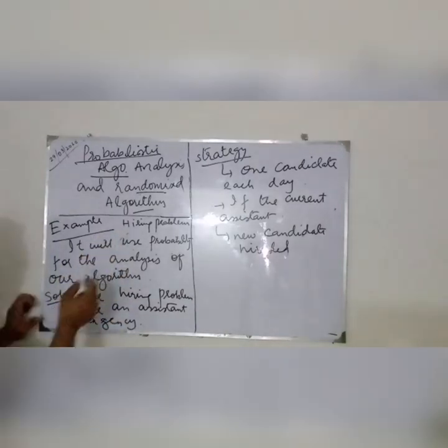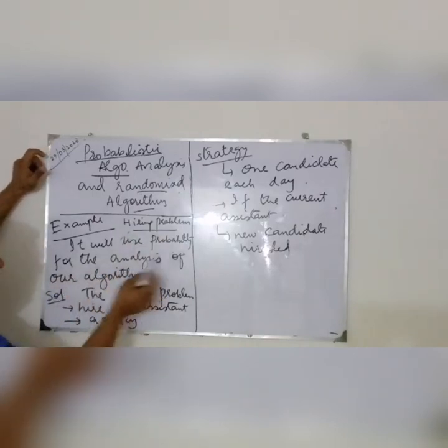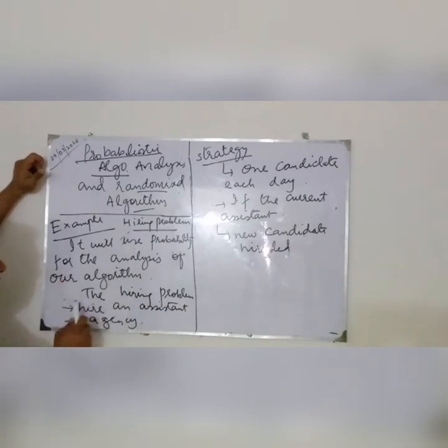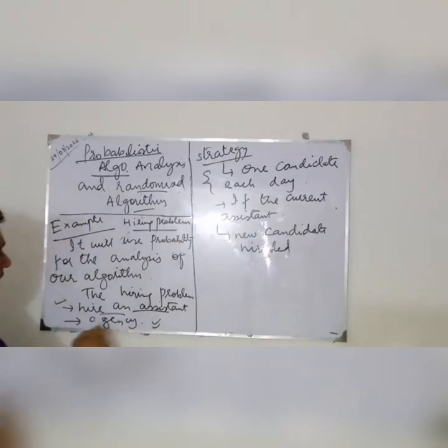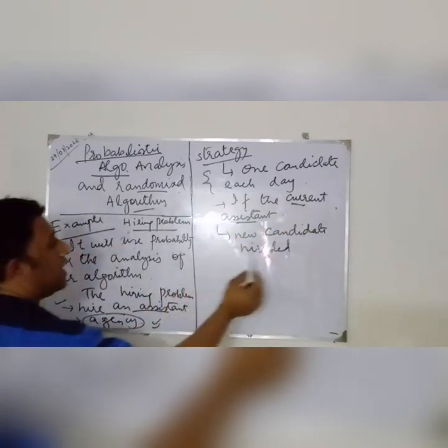This is a very basic understandable point. Randomized algorithm is what is happening in our book Introduction to Algorithm. It will use probability for the analysis of our algorithm, the hiring problem. The first thing is hire an assistant. My company manager already has an assistant, so I think I am going to hire a new assistant. So the first thing I am going to do is contact a job agency. The cost metric is the most important thing. The method is I am going to interview one candidate each day. If the current assistant I have is not as good, then I am going to hire a new candidate.